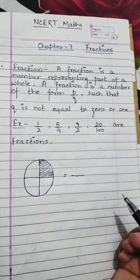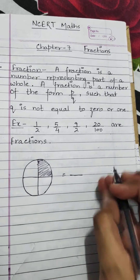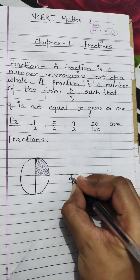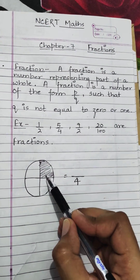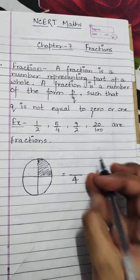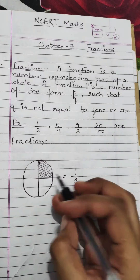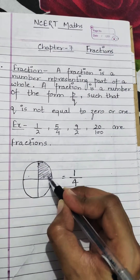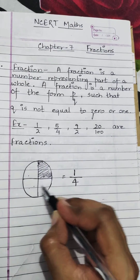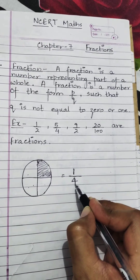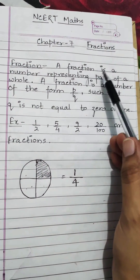I have divided the circle into four parts, so there were total four parts. Four will come in the denominator. One part out of four is shaded, so one will come in the numerator. Since we are writing the fraction of the shaded part, one came in the numerator and four came in the denominator.